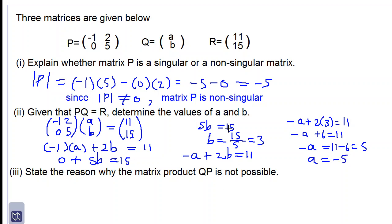So b is equal to 3 and a is equal to negative 5. So a is equal to negative 5 and b is equal to 3.